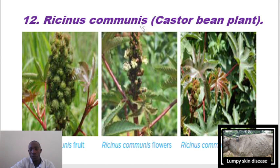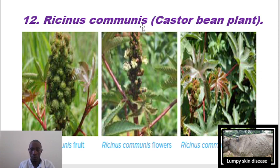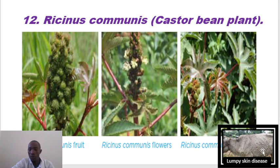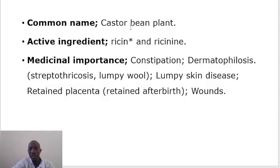The other plant is Ricinus communis, which is the castor bean plant. It is a toxic plant but also provides medicinal roles. For example, it contains lectin. It also contains ricin, which is a toxin, and ricinoleic acid. It's used in treatment of lumpy skin disease — these are nodules on the skin of the animal, always about 5 centimeters. Ricinus communis is also used in treatment of constipation as it plays a laxative role and helps movement of the bowel. It's also used in treatment of wounds and retained placentas.